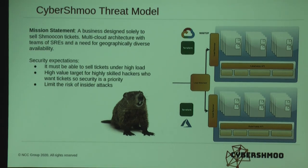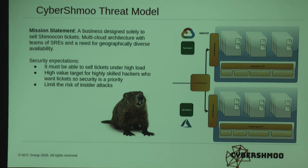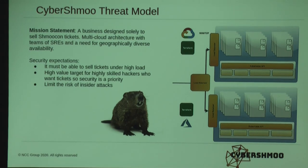The second company is Cyber Shmoo, a business that has only one customer: ShmooCon. Cyber Shmoo handles all the tickets for ShmooCon. They're a multi-cloud architecture that load balances between Google Cloud and Azure, with different Kubernetes clusters in different clouds. Their expectations: they need to sell tickets three or four times a year for a super high load for a short period of time, and it needs to work. It's also a super high value target for hackers — we're at a hacker con, selling hacker tickets, and hackers are going to try to break in.